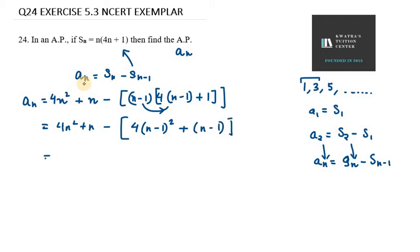So you get 4n square plus n minus. We have to expand the brackets now. So minus 4 times n minus 1 whole square minus n minus 1. Now we get 4n square plus n minus 4 times n minus 1 whole square can be written as a minus b whole square.